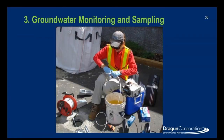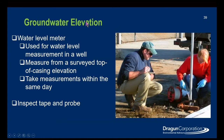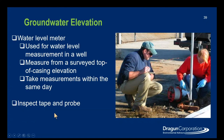Section three is on groundwater monitoring and sampling. Once the well is installed, we use those wells to collect information on groundwater elevation and collect groundwater samples. For groundwater elevation, we typically use a water level meter. This tool is lowered into the well and allows us to get a measurement of the water from the surface to the water table. We measure from a surveyed top of casing and take our water level measurement to get a groundwater elevation. It's important to collect all measurements within the same day, or before any major pressure changes occur due to weather conditions.